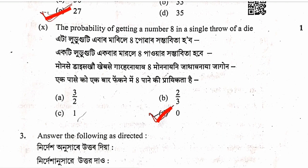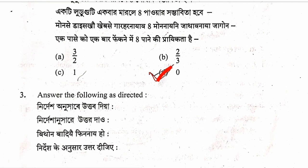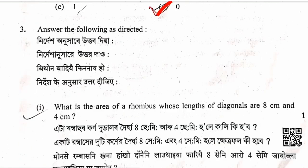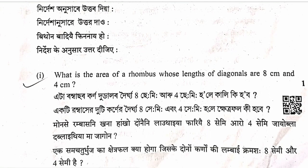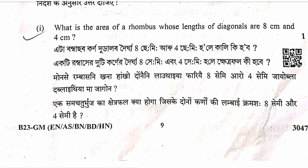Question 11: The probability of getting a number 8 in a single throw of a die. Since a die has only numbers 1 to 6, getting 8 is impossible, so the probability is zero. Option B is correct.